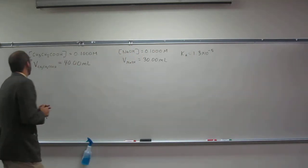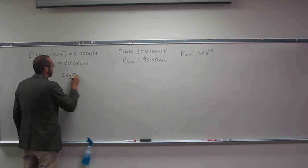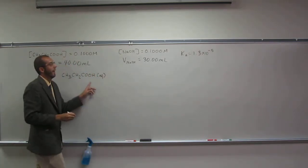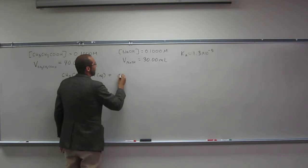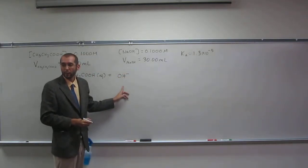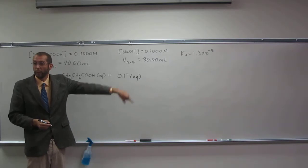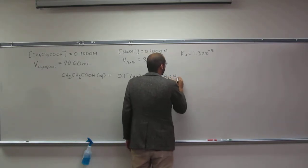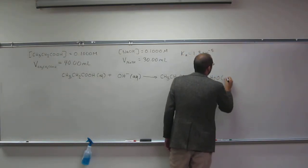So the first thing we're going to want to do is write out a reaction equation of the things that are reactive. So the first thing we've got here is the propionic acid, so CH3CH2COOH aqueous, and that is reacting with NaOH at this point in time. So just react it with the OH minus anion. Remember, this reaction is a straightforward reaction. So we're going to get CH3CH2COO minus aqueous plus H2O liquid.